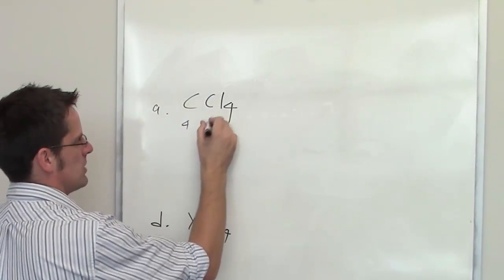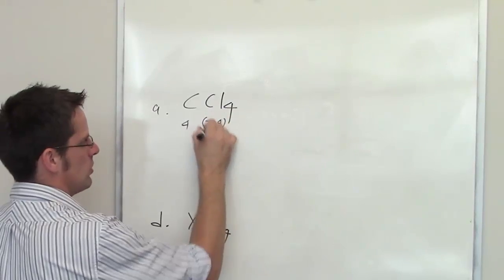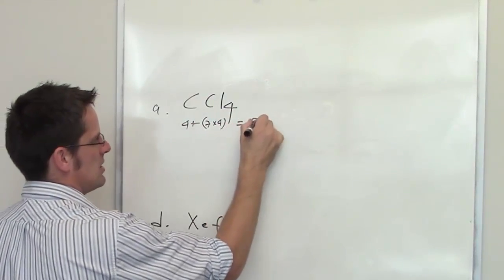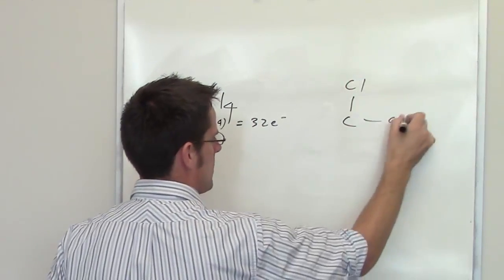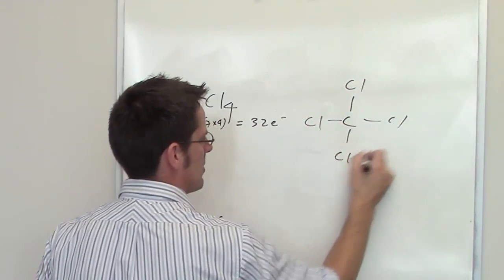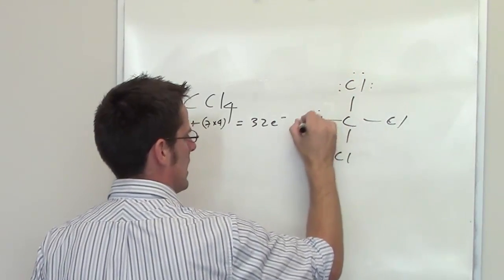Carbon has four valence electrons, chlorine has seven, there are four individual chlorines, so I've got 32 total electrons to play with. I now put the carbon in the center, put each of the chlorines around the perimeter, and then I give everybody a full octet.